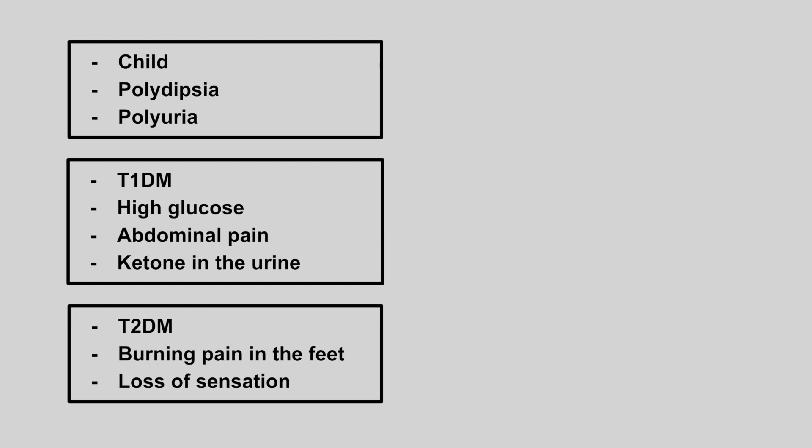A child that comes in with polydipsia and polyuria — this is type 1 diabetes, the autoimmune form, which tends to happen in younger patients. Compare this to type 2 diabetes, which tends to occur in older, more overweight patients. For histology, type 1 shows lymphocytes due to the autoimmune process, whereas type 2 shows amyloid buildup — think Congo red staining.